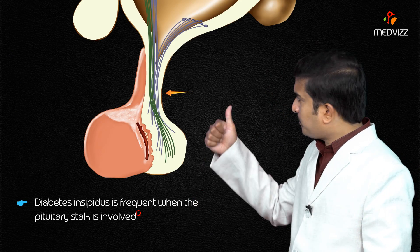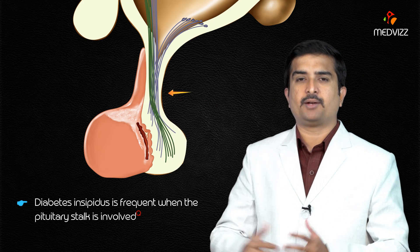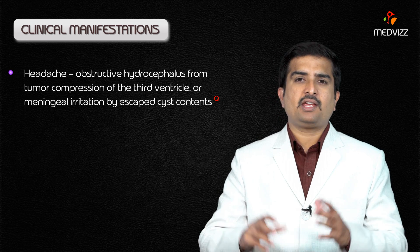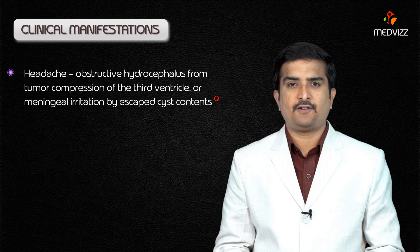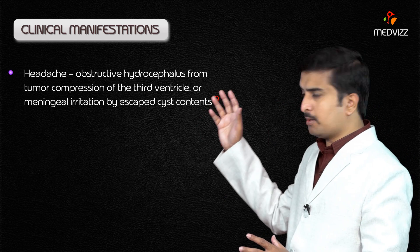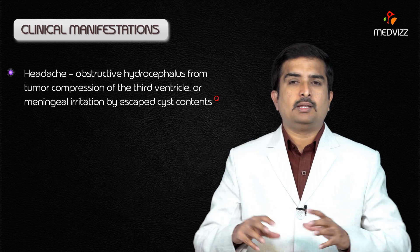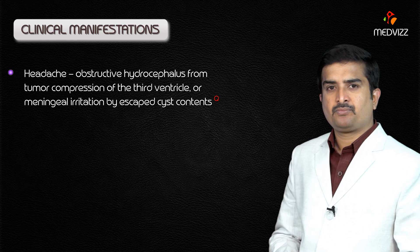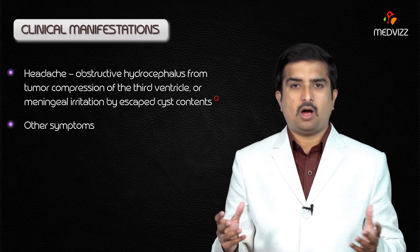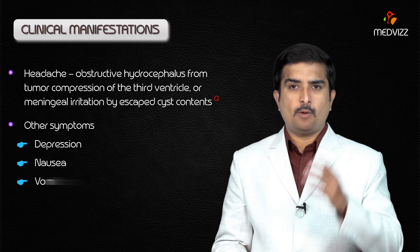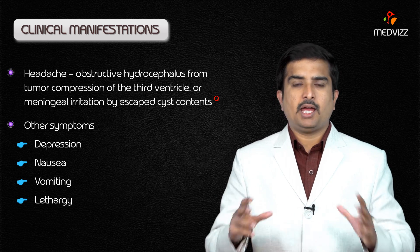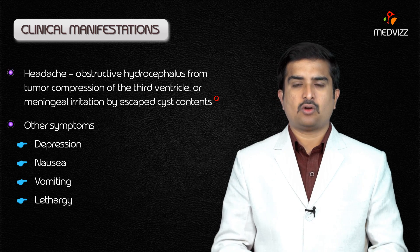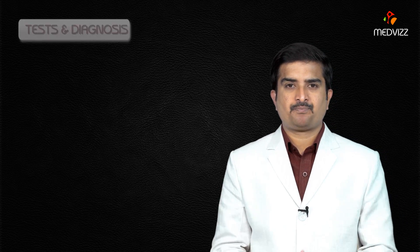Diabetes insipidus is frequent, especially when the pituitary stalk is involved. Other clinical manifestations include headache, mainly due to obstructive hydrocephalus from the tumor compressing the third ventricle, or meningeal irritation from escaped cyst contents. Other common symptoms are depression, nausea, vomiting, and lethargy.